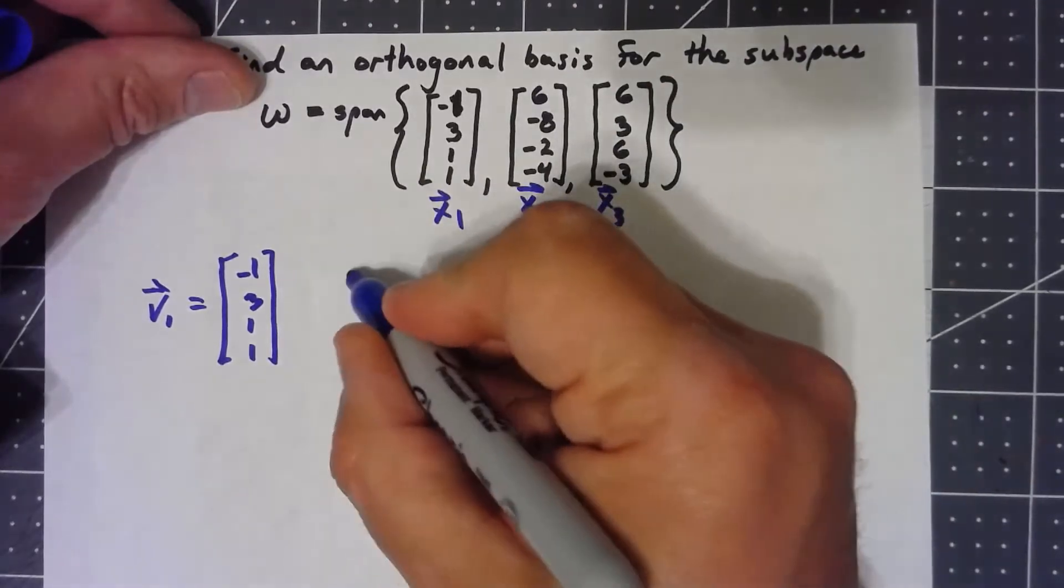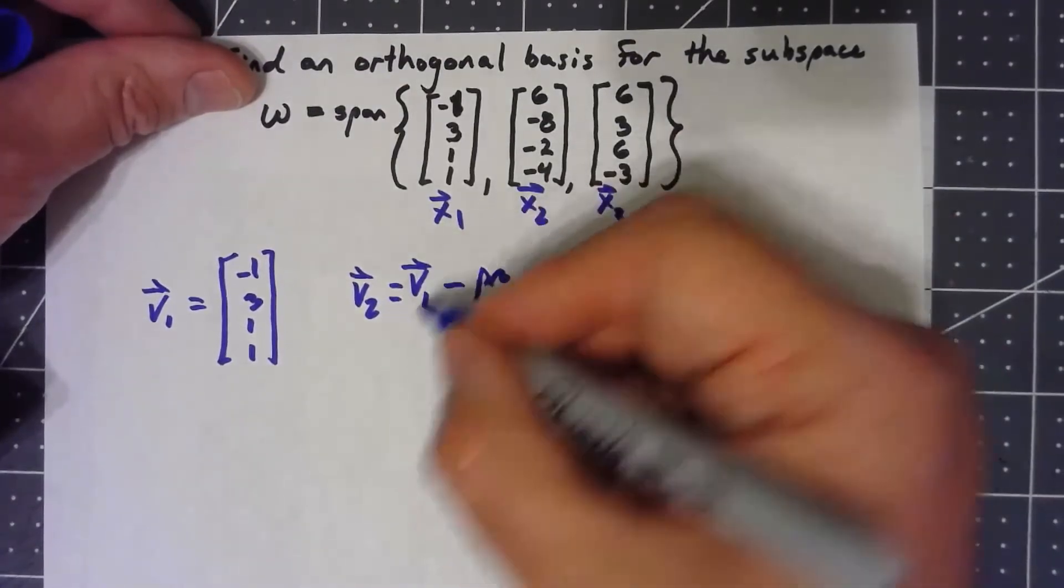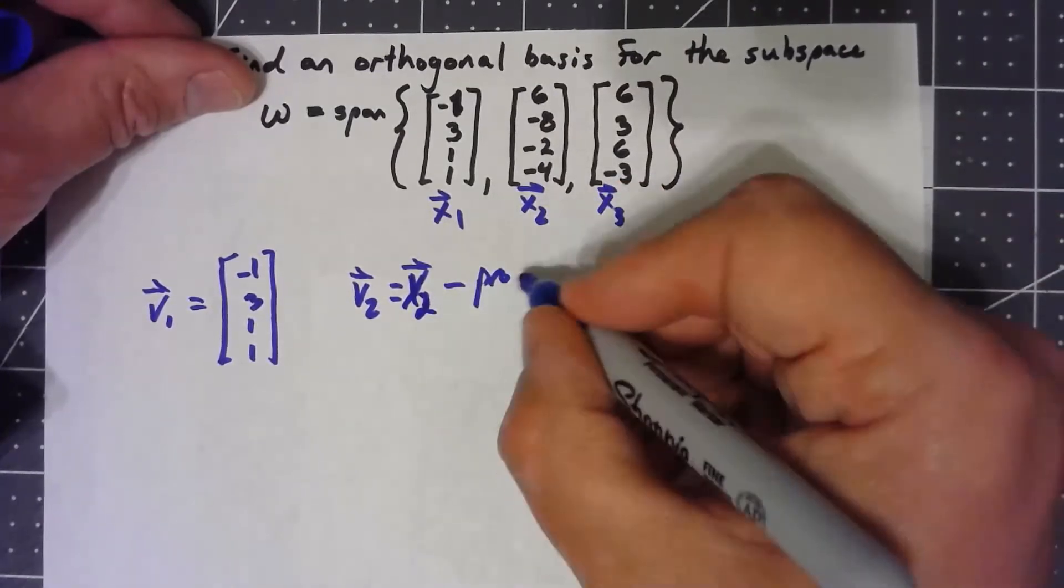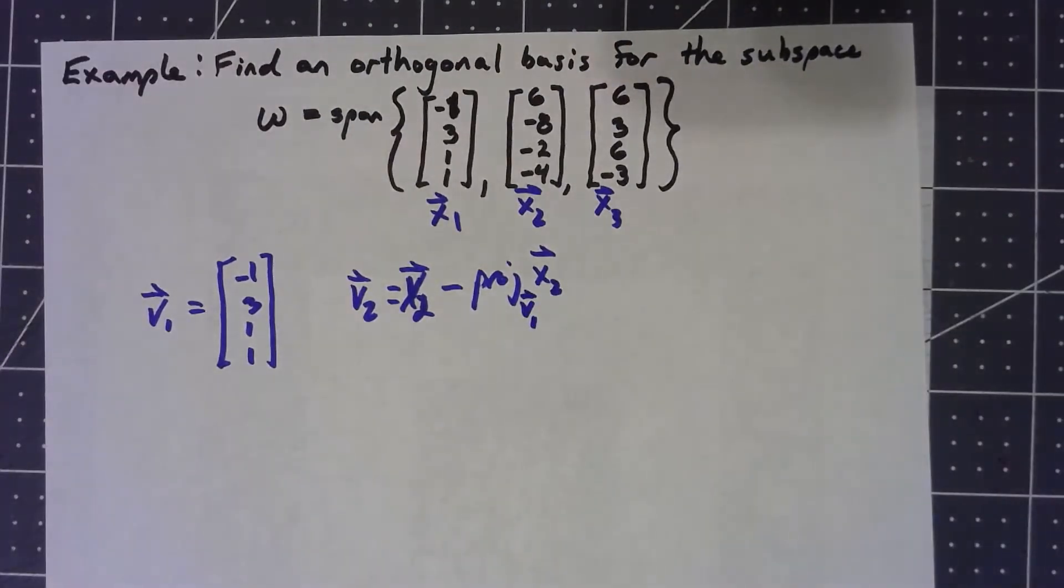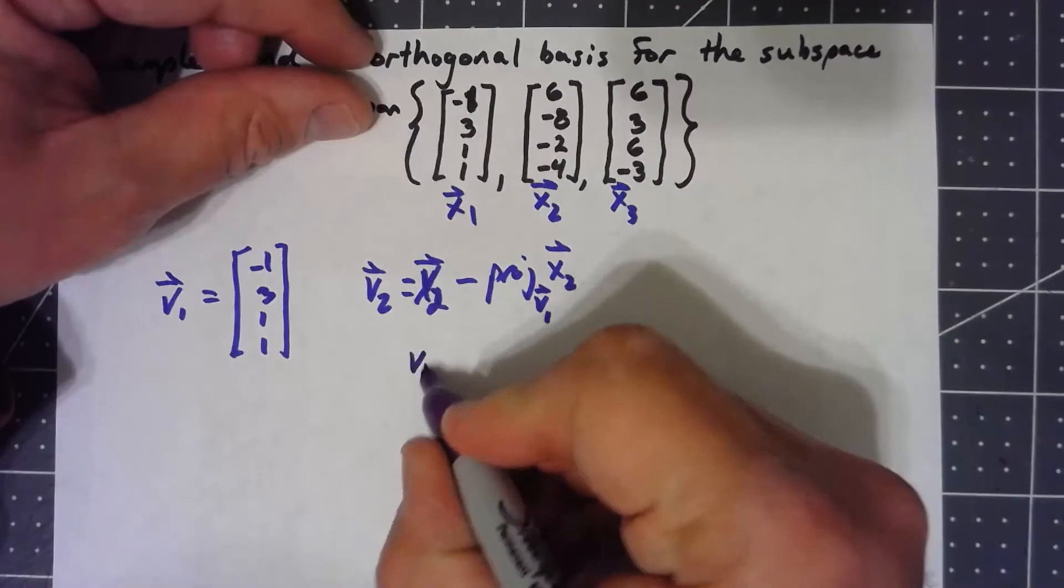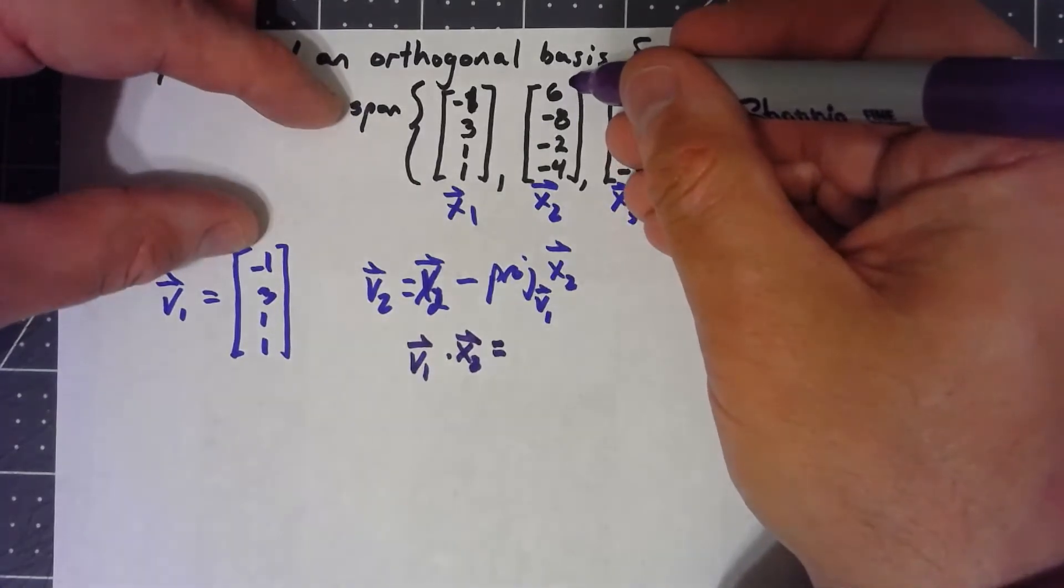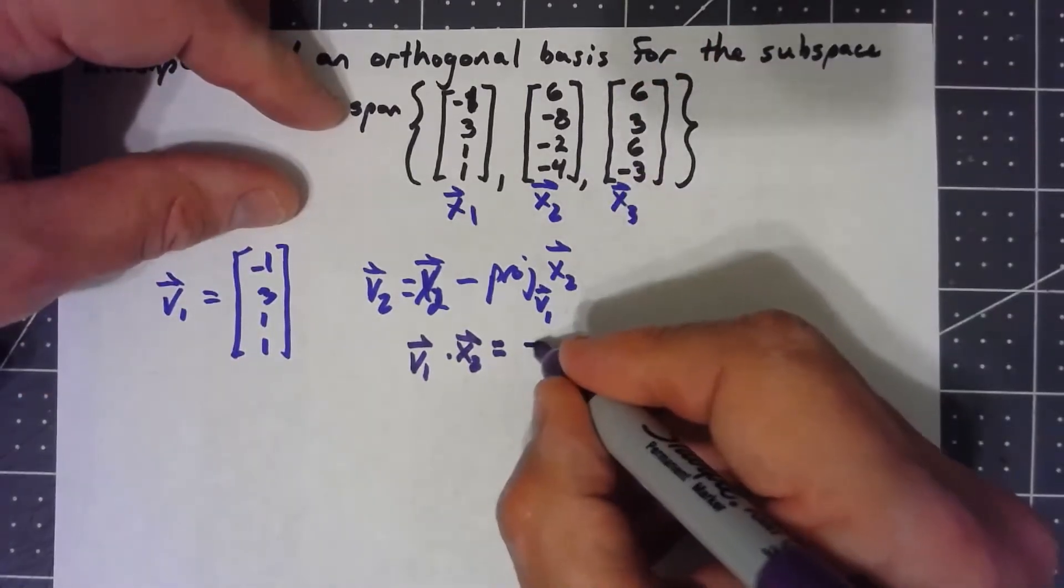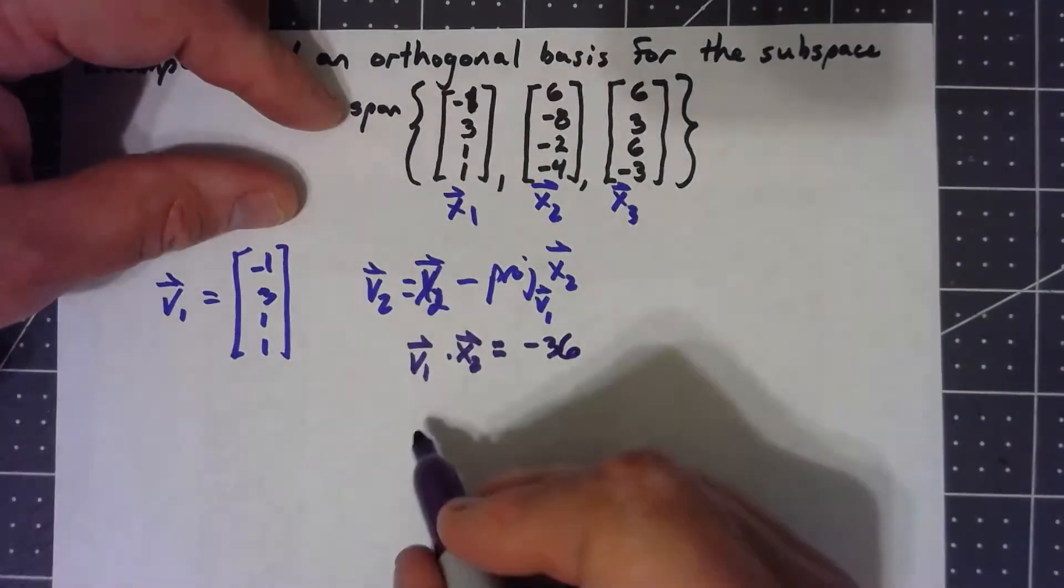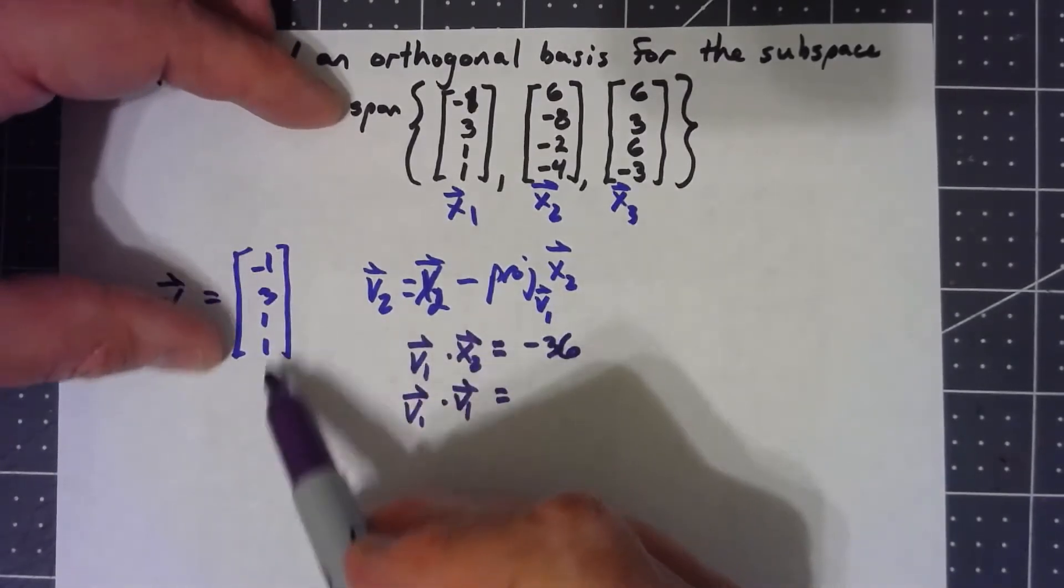My v2 is my second vector x2 minus the projection of x2 onto v1. We do that by doing v1 dot x2. So I'm dotting this and this. That's negative 6 minus 24 is negative 30, minus 2 minus 4 is negative 36. I put that over v1 dotted v1 is 1 plus 9 plus 1 plus 1 is 12.